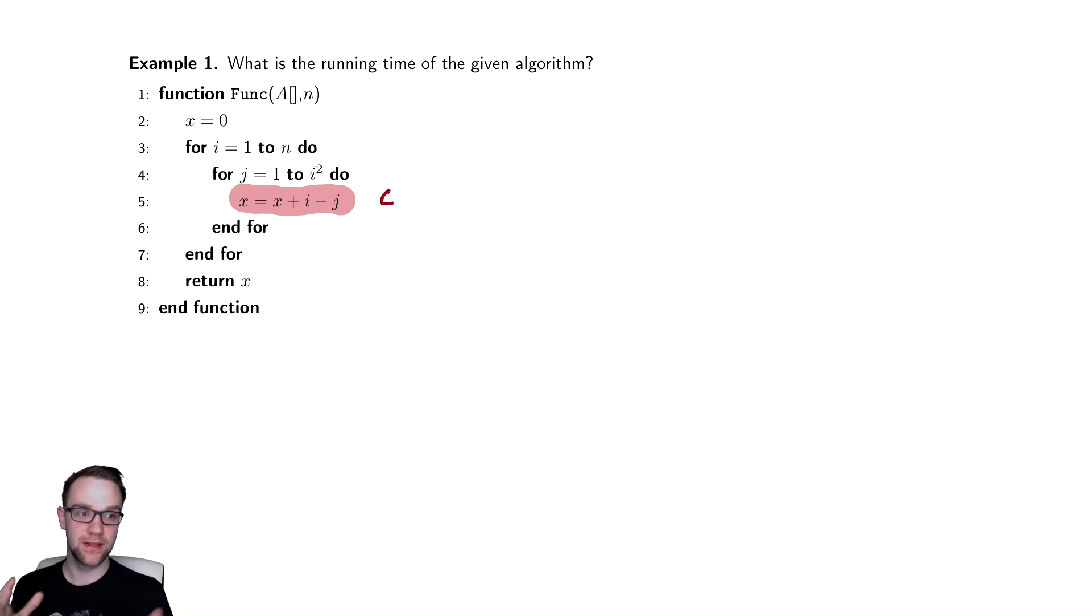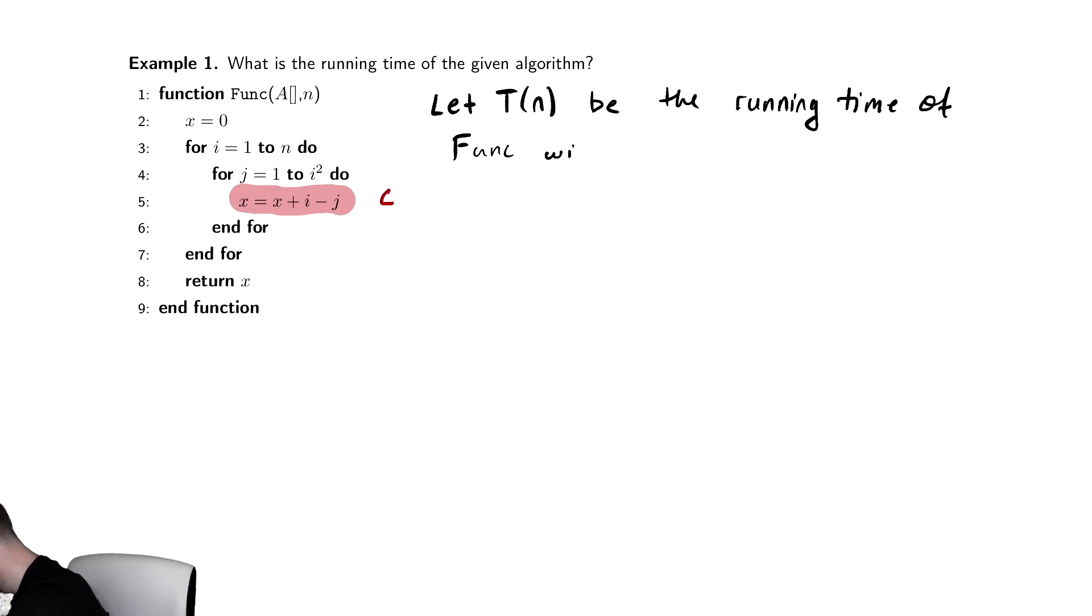And then we can always translate those for loops into summations. So let's try and write down the necessary reasoning. Let T(n) be the running time of func with an input of size n. So we're going to define that T(n) that way we have some more convenient quantity to talk about. And we can always express T(n) as a summation.